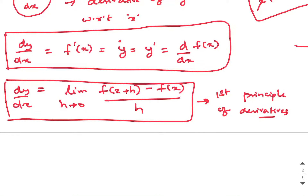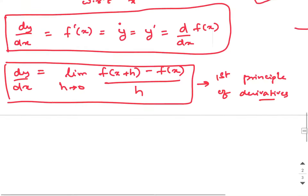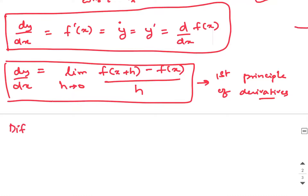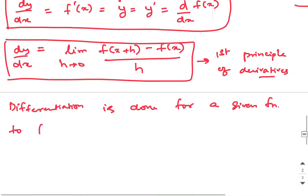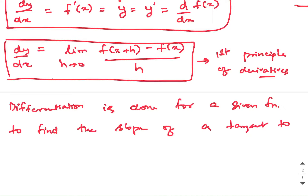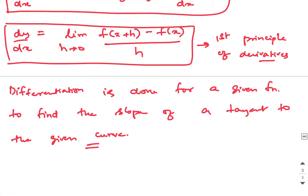From now on, if someone asks you why we differentiate: we differentiate to find the slope of a tangent at a particular point. In this chapter you will learn how to differentiate, and in the next chapter we will apply this concept. So to be clear, differentiation is done for a given function to find the slope of a tangent to the given curve. That mathematical formula is limit h tends to 0 of f of (x plus h) minus f of x divided by h.